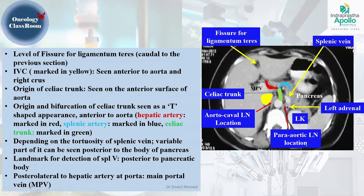When contouring para-aortic lymph nodes per RTOG guidelines, we take 1 cm, 2 cm, and 3 cm left, anterior, and right of the aorta, and 2–5 mm posteriorly or to the anterior vertebral body. Per cervical cancer para-aortic nodal guidelines, the approach is different. For pancreatic or biliary contouring, we contour around the celiac artery with an additional 1 cm, and also contour the superior mesenteric vein, portal vein, and superior mesenteric artery. Identifying these structures is important for that reason.